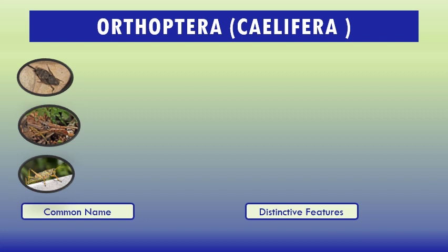Suborder Caelifera, common name short-horned grasshoppers. Caelifera generally have antennae that are shorter than the body. The suborder contains the grasshoppers, pygmy grasshoppers, and pygmy mole crickets. Caelifera usually have a large hind femora, short antennae, and tarsi with three or fewer segments.